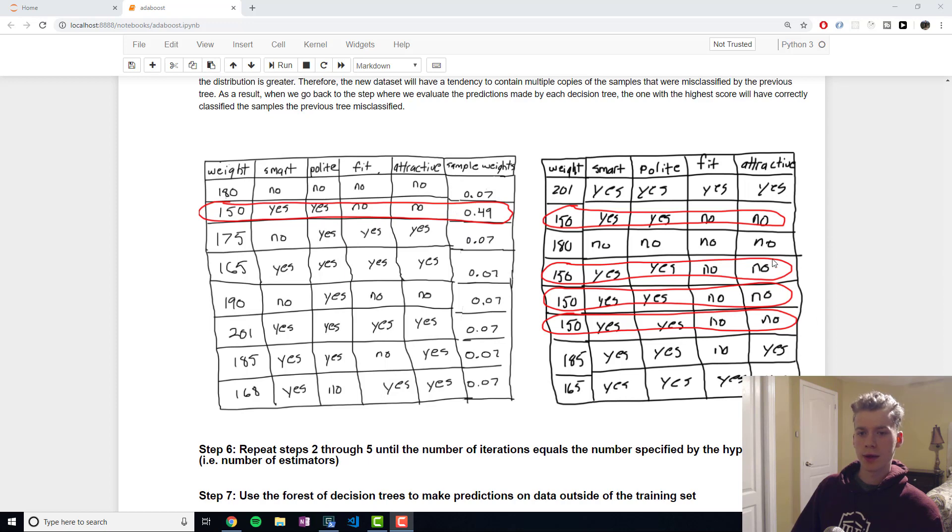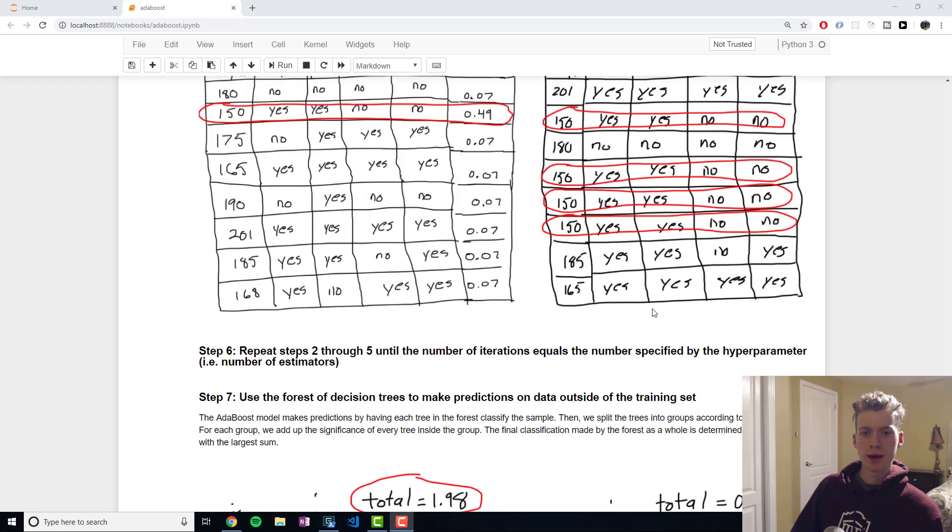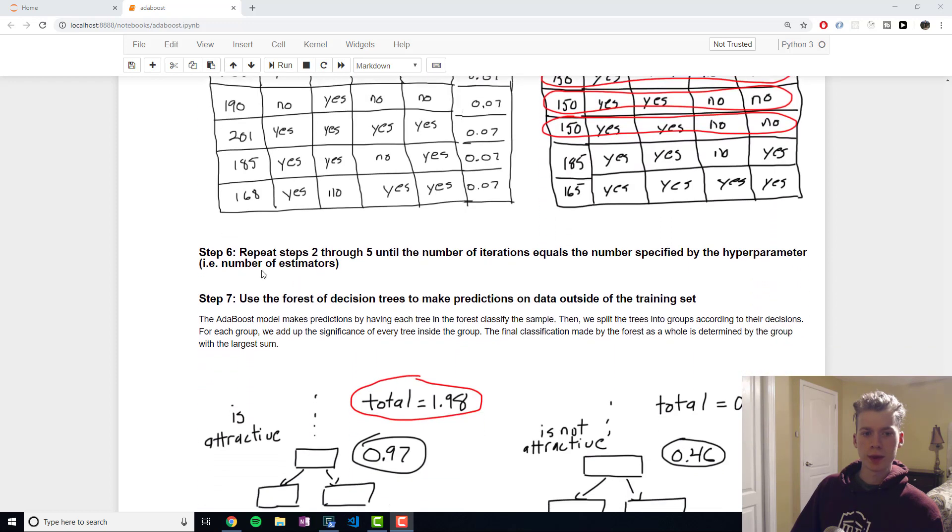Then what we want to do is we want to repeat the previous steps, steps two through five, until the number of iterations matches the hyperparameter. In sklearn this is the number of estimators.